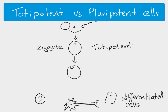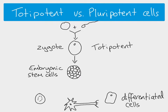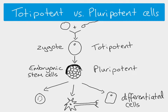As that zygote divides, after a short while we have a ball of cells which is the embryo, and these are now embryonic stem cells. At this stage, some of the cells have already started to form the placenta. That means the rest of the cells are not able to form placental cells, but these embryonic stem cells are able to divide and form any other cell in the body except for placental cells. So they're still very versatile, and we call them pluripotent stem cells.